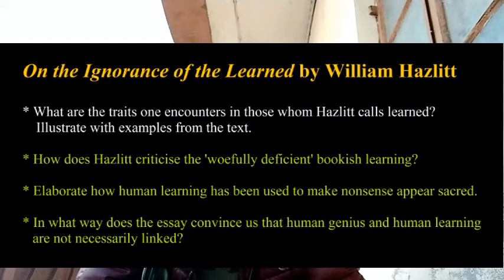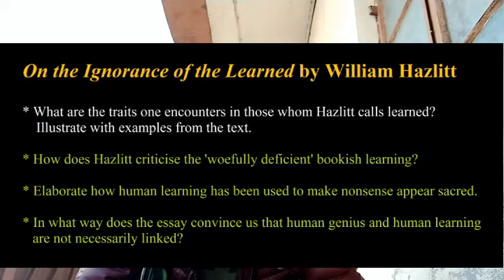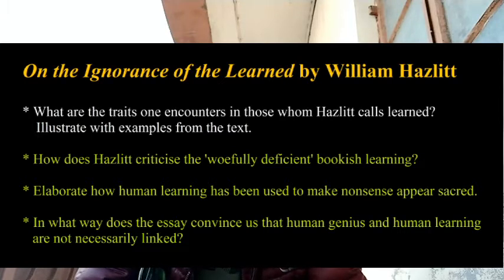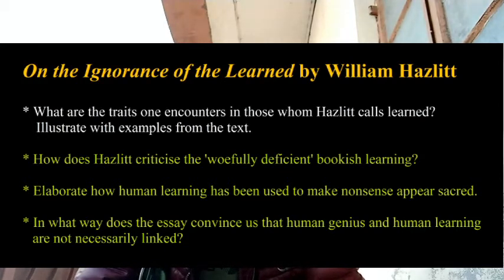Next essay: On the Ignorance of the Learned by William Hazlitt. Know the background and context — why was Hazlitt writing this. Important questions: What are the traits one encounters in those Hazlitt calls 'the learned'? How does Hazlitt criticize the woefully deficient bookish learning — because the entire essay is about this. Also: how has human learning been used to make nonsense appear sacred? And very importantly: in what way does the essay convince us that human genius and human learning are not necessarily linked?